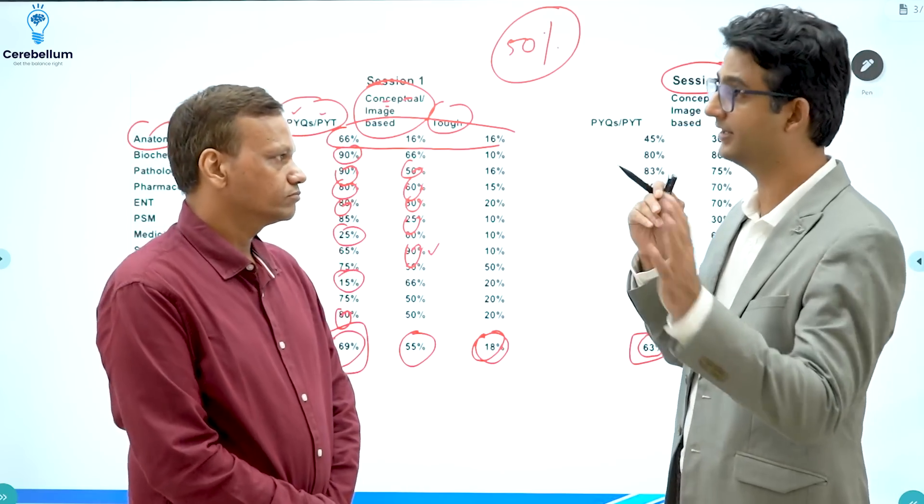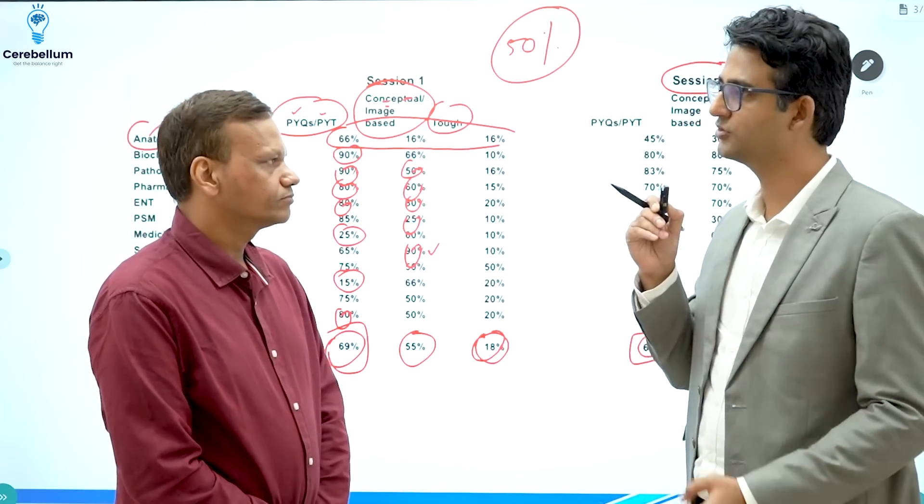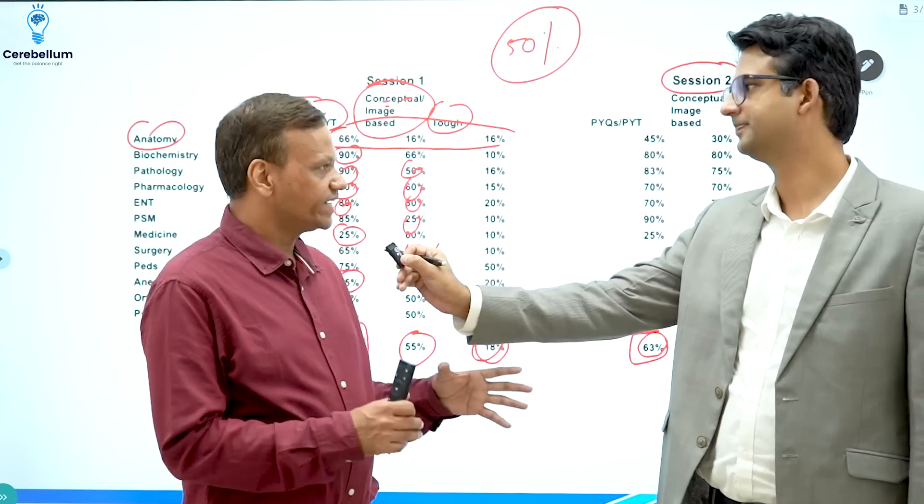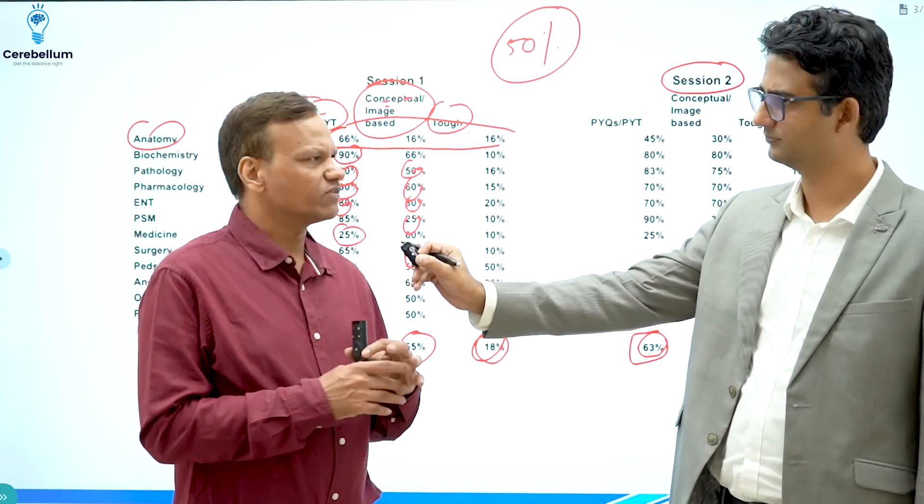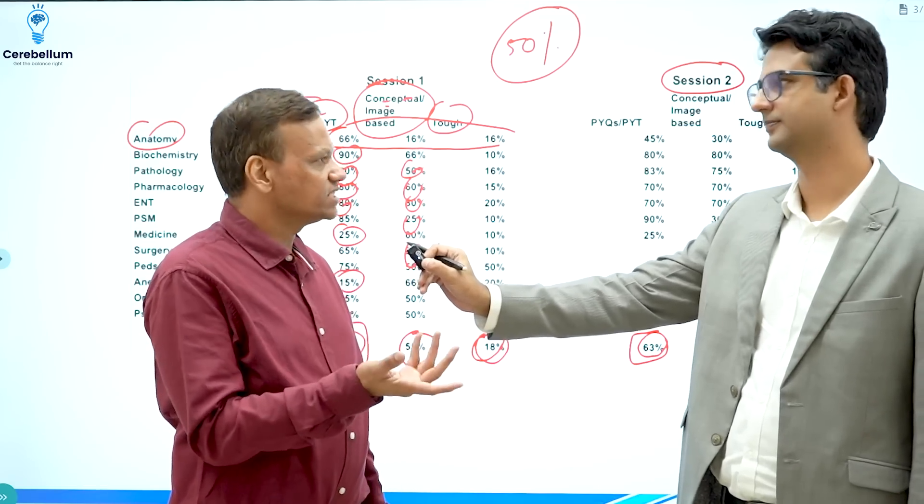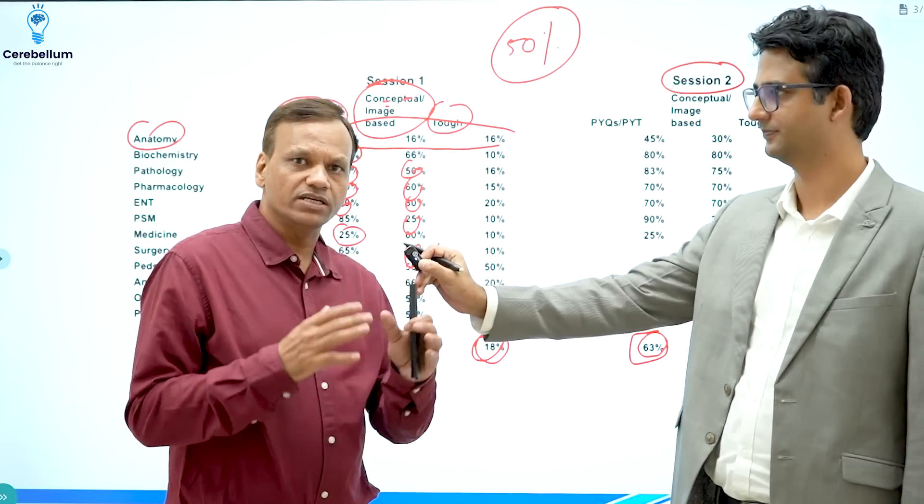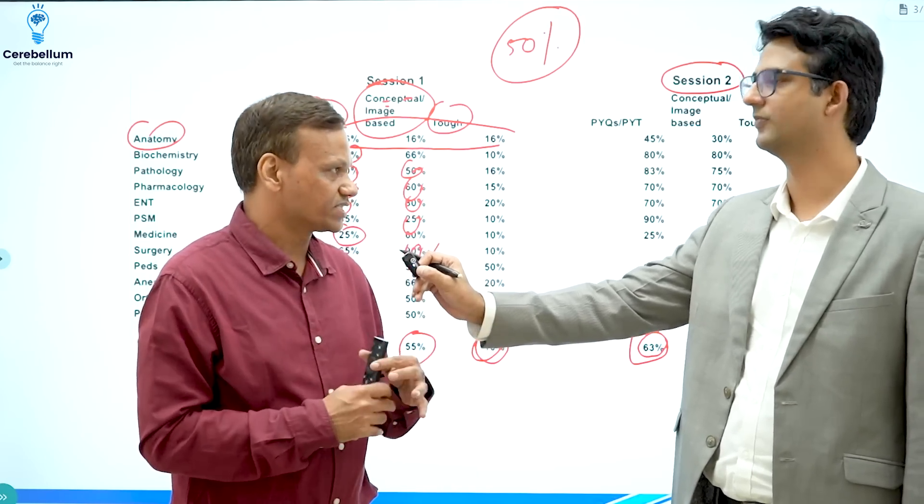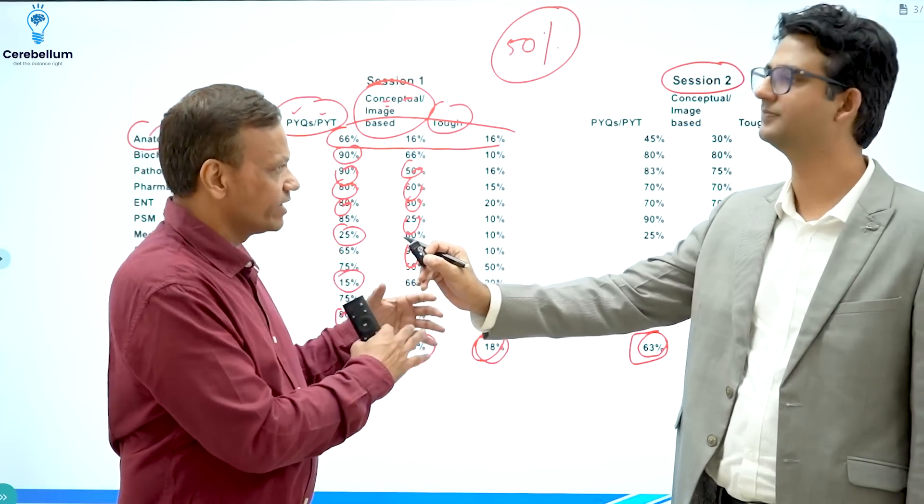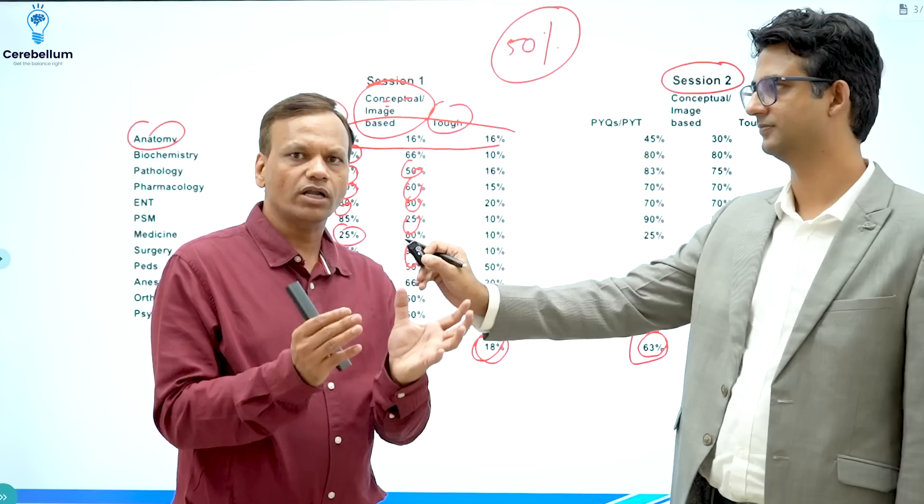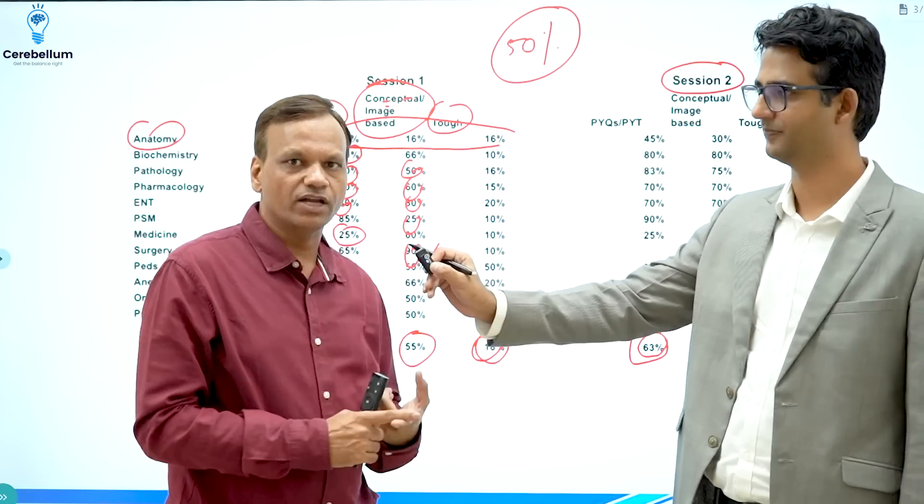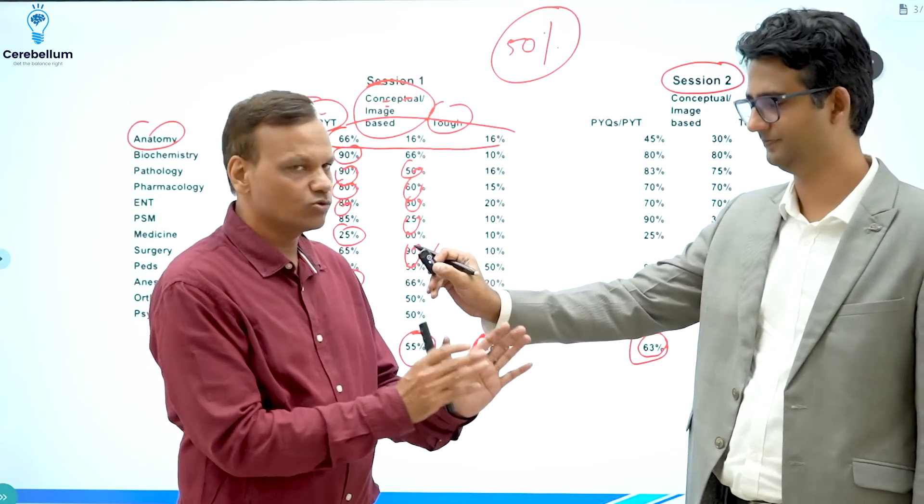So what Jayaji sir is saying that even in the tougher exam, at least 50% you can assume would be PYTs. Sir, sometimes we have papers like NEET PG 23 which was heavily PYQ based. So what is the range sir as far as the PYQs and PYTs are concerned? So if we talk about PYTs, the range I expect is usually between 60 to 90%. So in an easier exam when the PYTs are more, we say the exam is easier. So that will range to 80-90%. But even the toughest of the exams, it will be nearly 60%.